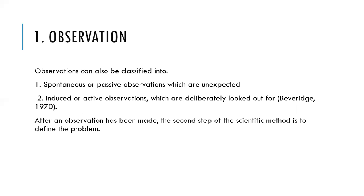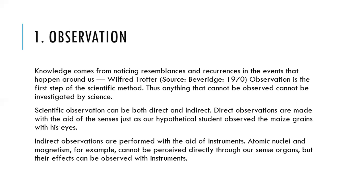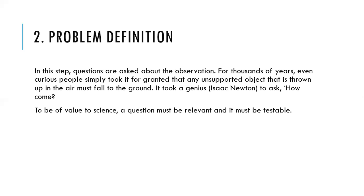Observation can be spontaneous or passive, and it can be induced or active, either direct or indirect. Once you move from observation, the next thing is that you have to find the problem — problem definition. In this step, questions are asked about the observation. When that mango dropped, the question is: what made the mango fall from the tree to the ground? That's problem definition.